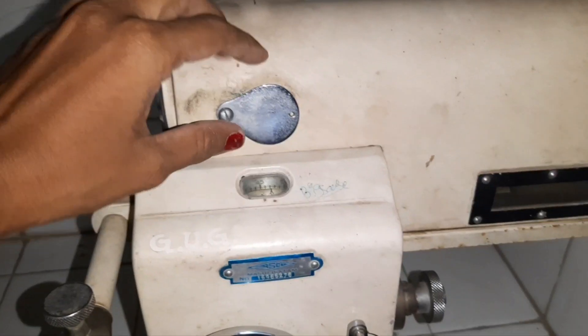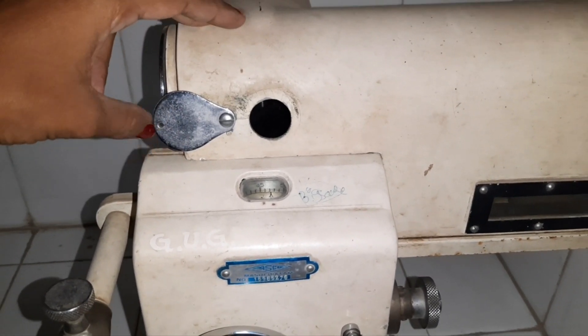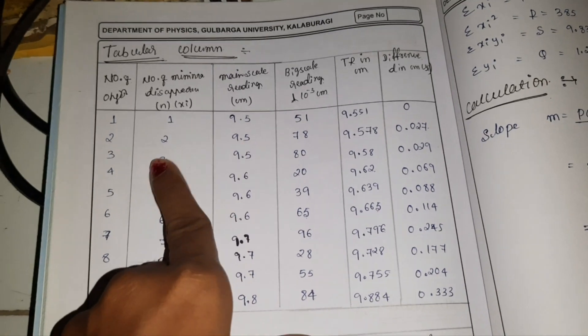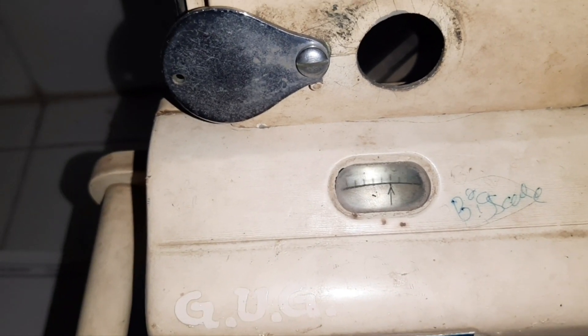You can observe the fringes using the telescope and note down the readings. Once you get the fringes after adjusting the mirrors M1 and M2, you can view them through the telescope. For the first disappearance, the main scale reading is 51. Then go for the second minima disappearance and note the main scale reading — you will get 78.